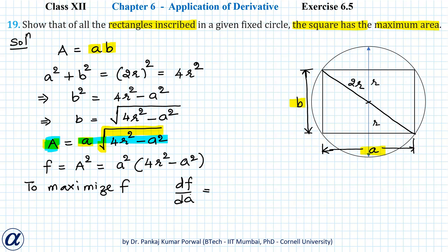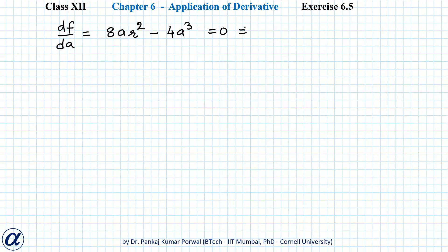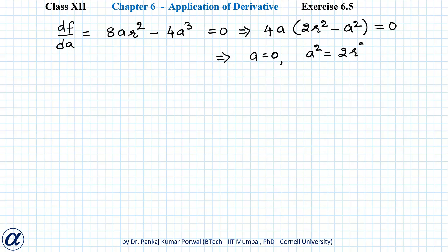Let us find the first derivative of F with respect to A. Using the product rule, dF/dA equals 2A times (4R squared minus A squared) plus A squared times (−2A), which equals 8AR squared minus 2A cubed minus 2A cubed, that is 8AR squared minus 4A cubed. Setting this equal to zero gives A times (8R squared minus 4A squared) equals zero, so A equals 0 or A squared equals 2R squared, giving A equals root 2R. The negative solution is ignored since A is a side of a rectangle and must be positive.